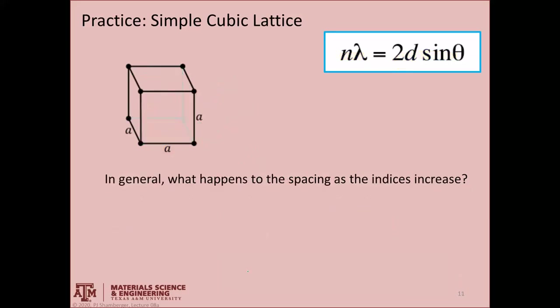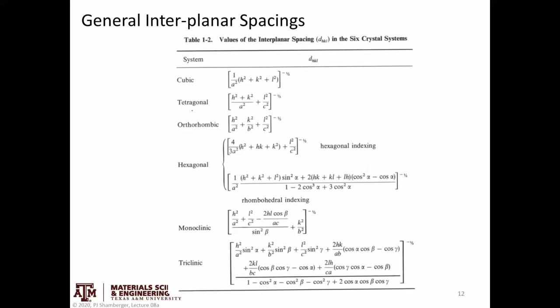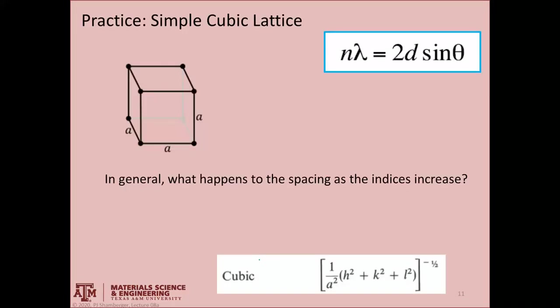For other symmetries, that expression is going to get more and more complicated. For example, for a triclinic lattice, where A does not equal B, does not equal C, and none of the angles are 90 degrees, I get a whole mess of an expression. However, if you know your lattice parameters, your A, B, C, alpha, beta, gamma, you can drop them in here and calculate the D-spacing again for any particular peak.